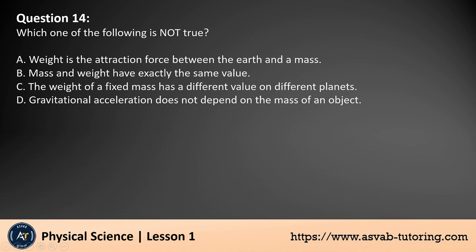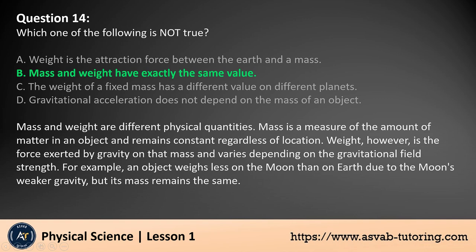Question 14: Which one of the following is not true? A. Weight is the attraction force between the Earth and a mass, B. Mass and weight have exactly the same value, C. The weight of a fixed mass has a different value on different planets, D. Gravitational acceleration does not depend on the mass of an object. The answer is B. Mass and weight are different physical quantities. Mass is a measure of the amount of matter in an object and remains constant regardless of location. Weight, however, is the force exerted by gravity on that mass and varies depending on the gravitational field strength. For example, an object weighs less on the Moon than on Earth due to the Moon's weaker gravity, but its mass remains the same.